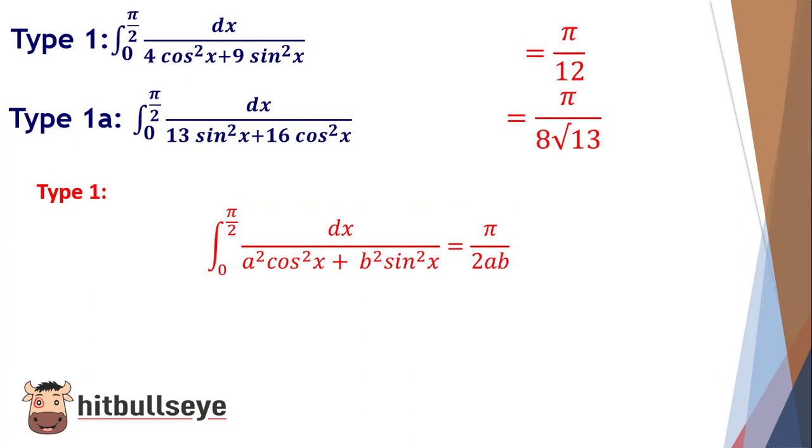For example, if I talk about the first expression, 4 and 9 are the perfect squares of 2 and 3. So you can straight away write π/(2×3×2) and that will give you π/12.